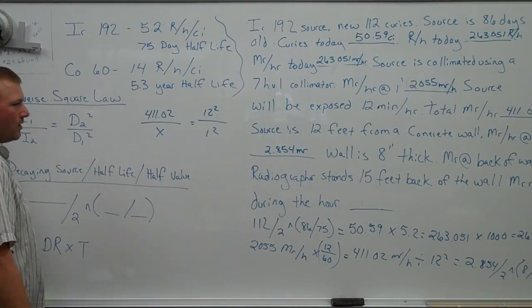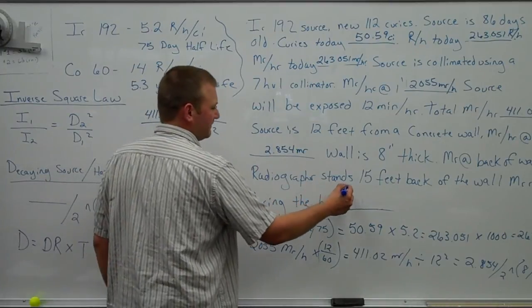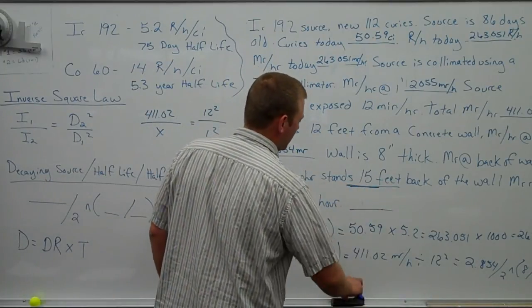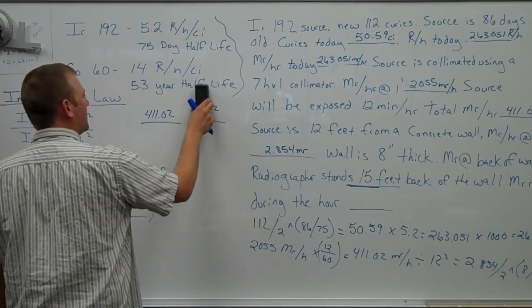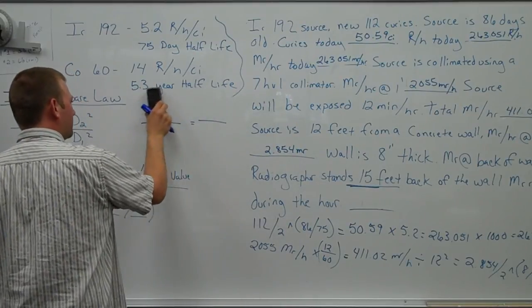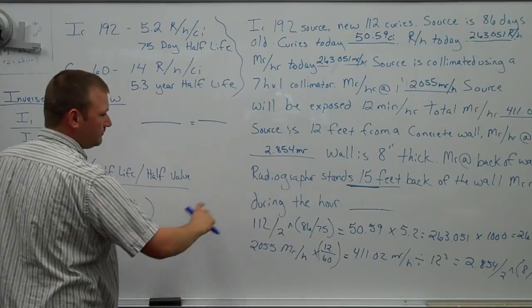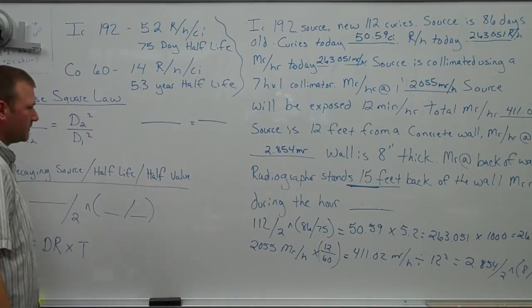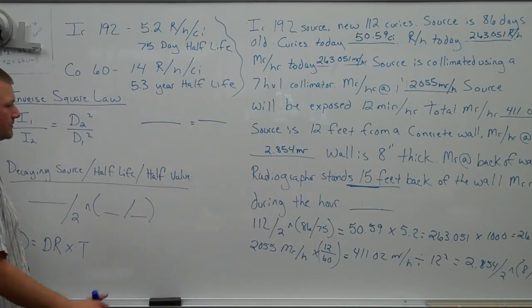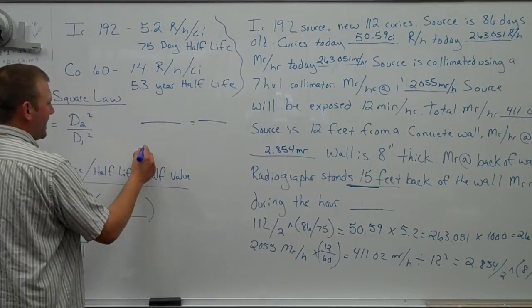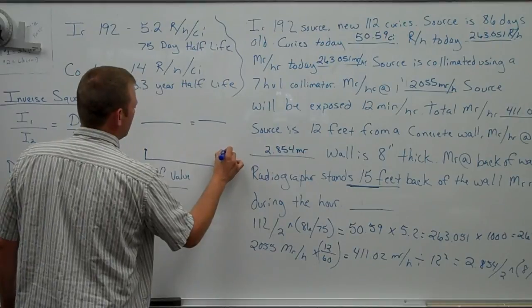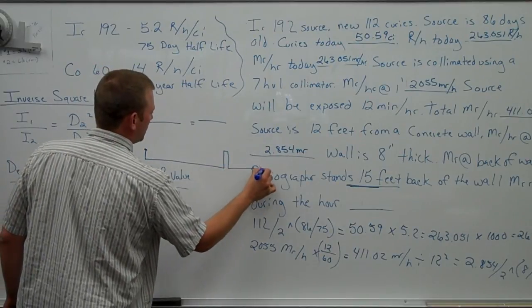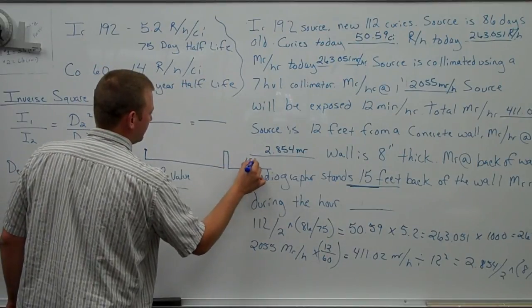Now we're on the backside of the wall and we're going to go another 15 feet back. This is where people kind of get confused. I'm going to keep this guy here. We are already at 12 feet 8 inches. Here's our source, here's my little source drawing. Here's our concrete wall. We're going back another 15 feet.